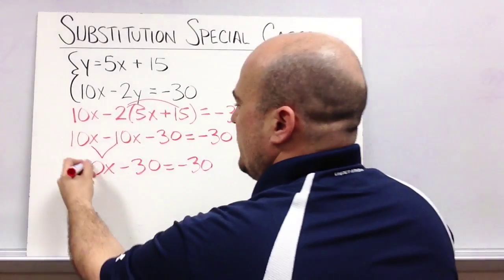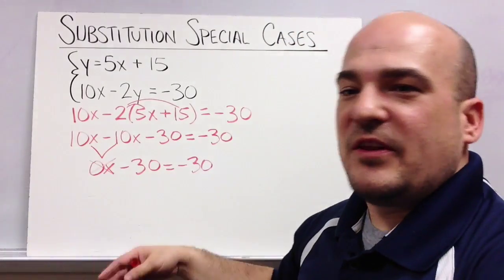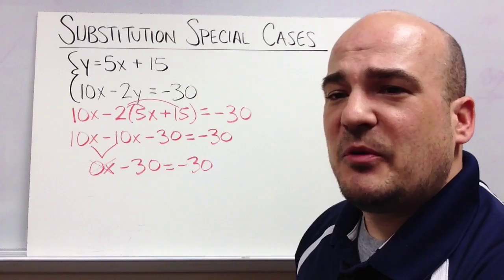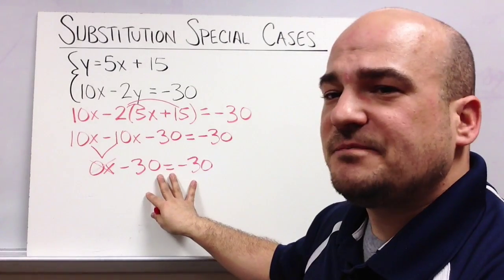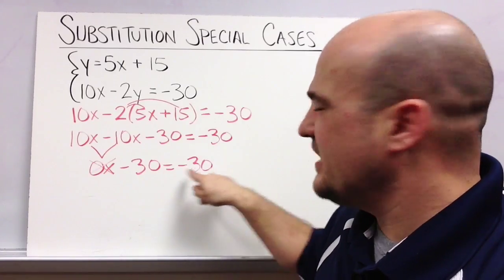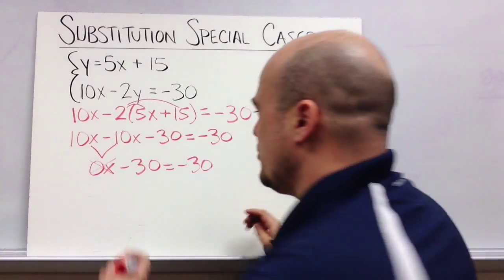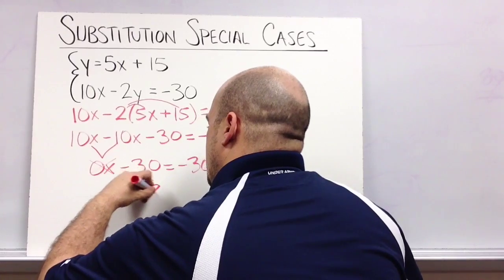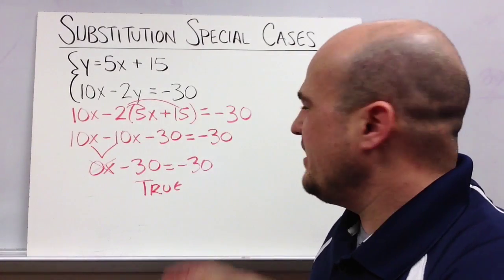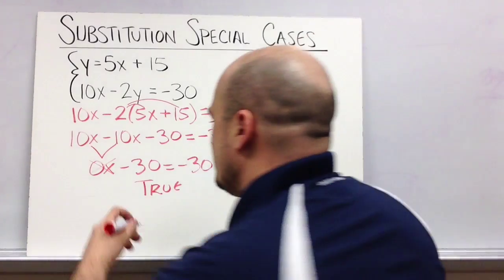And 0 times x is 0. That goes away. And I'm left with, again, my variable went away. It disappeared. I don't have any more variables left. I just have numbers. And so I look to see if it's a true or false statement. And negative 30 does equal negative 30, so in this case it's true. And we know from that first example if we end up with a true statement and no variables, then that means we must have infinite solutions.